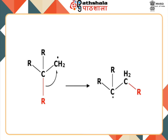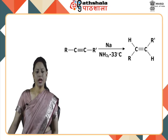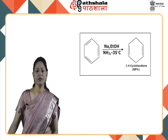Rearrangement reactions are another type of reaction which involve free radical formation. Free radicals may also undergo rearrangement to form a more stable radical and then the final product. In a radical reduction reaction, hydrogen is added to a pi bond. For example, the radical reduction of an alkyne to alkane with sodium in ammonia is a trans addition of hydrogen to an alkyne. This reaction occurs via the formation of radicals. Another example of this type of radical reduction is the Birch reduction.